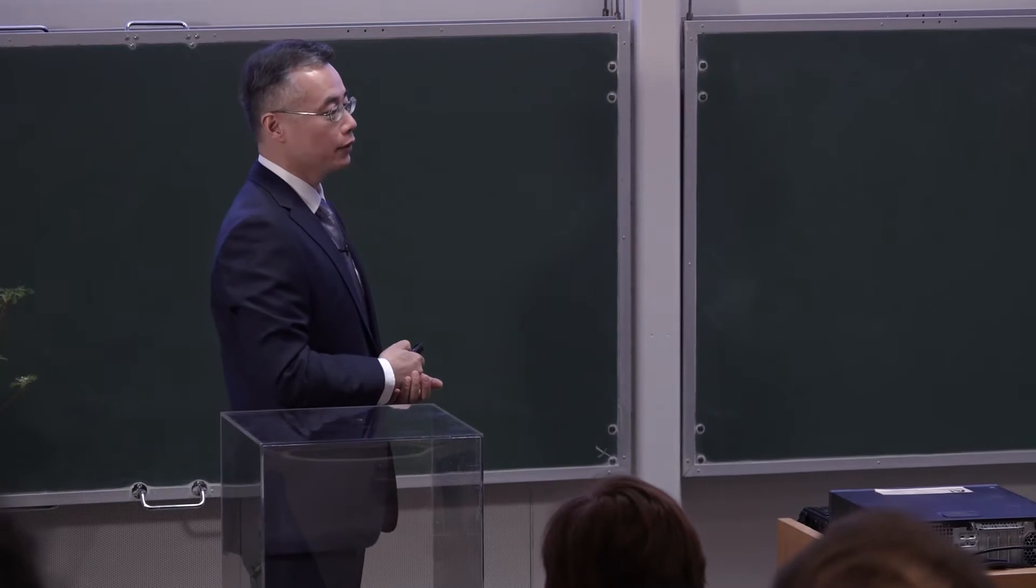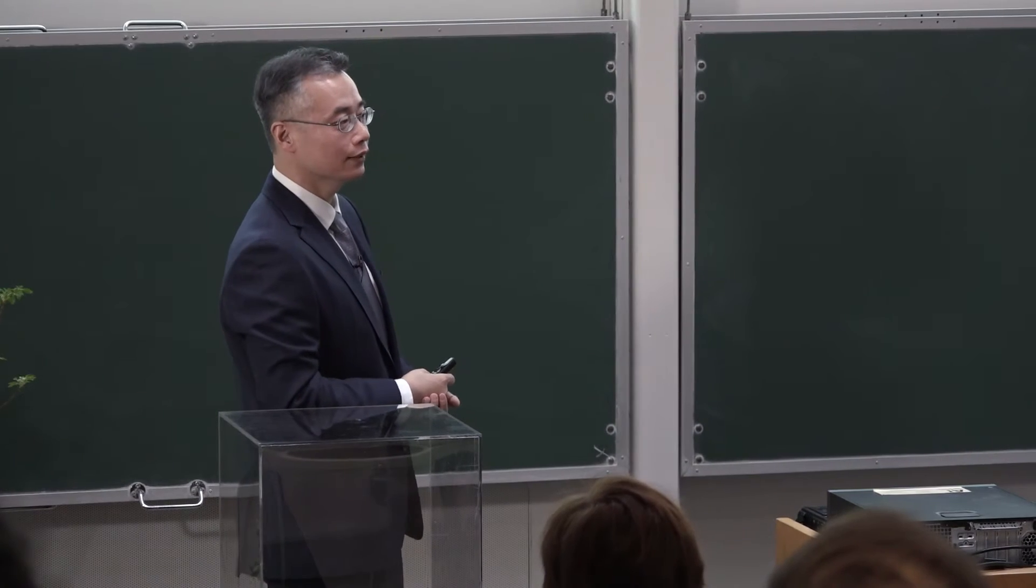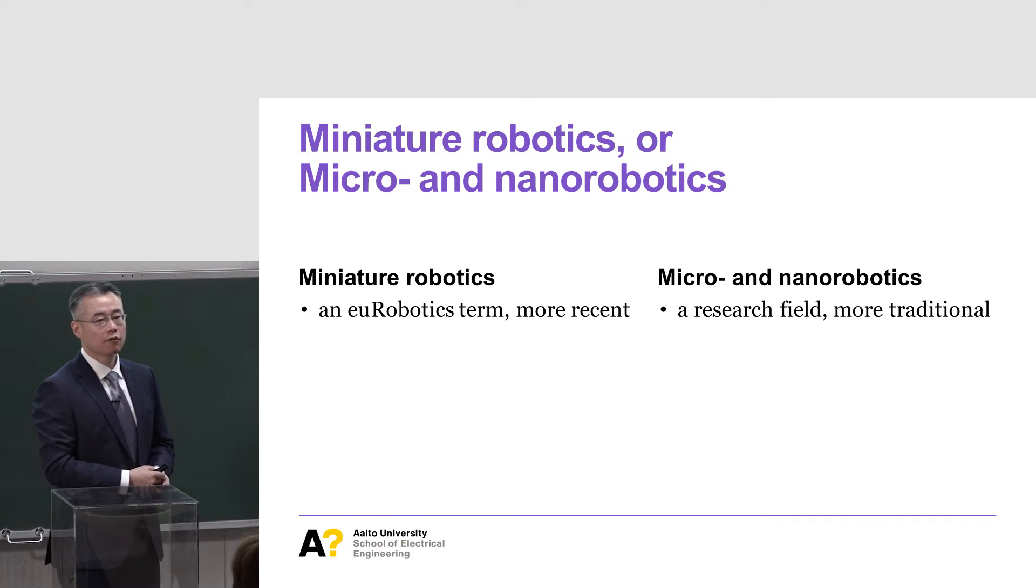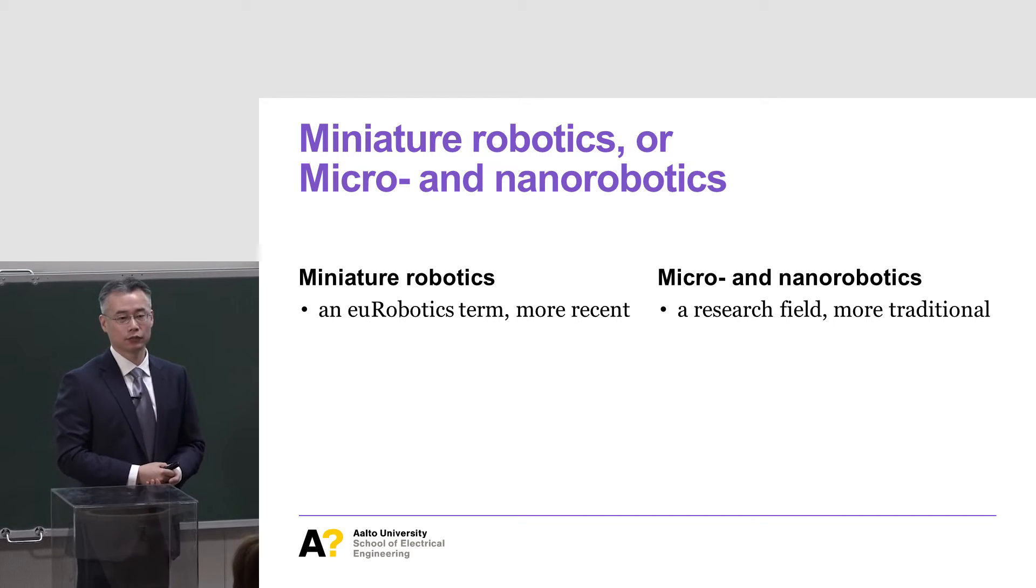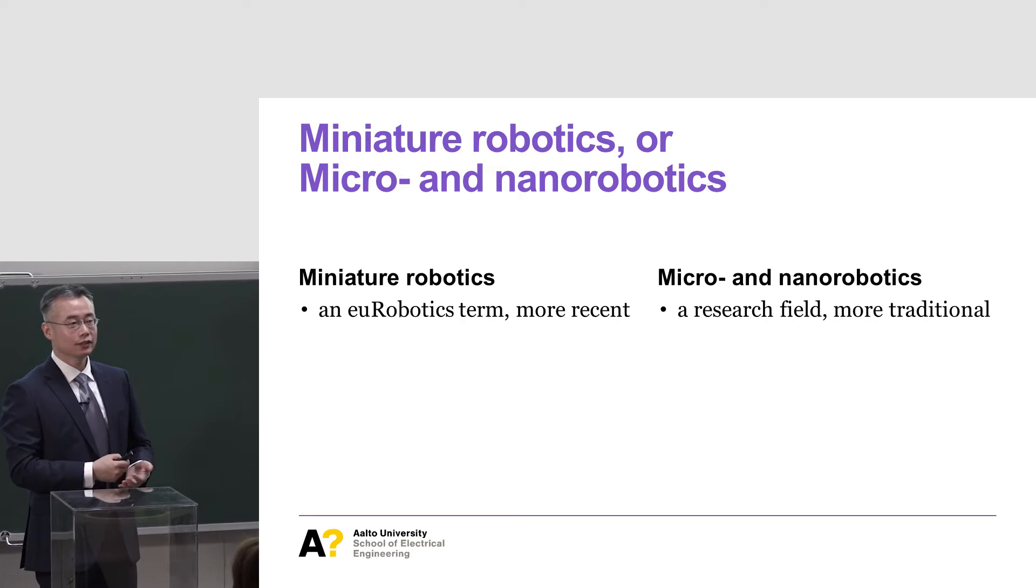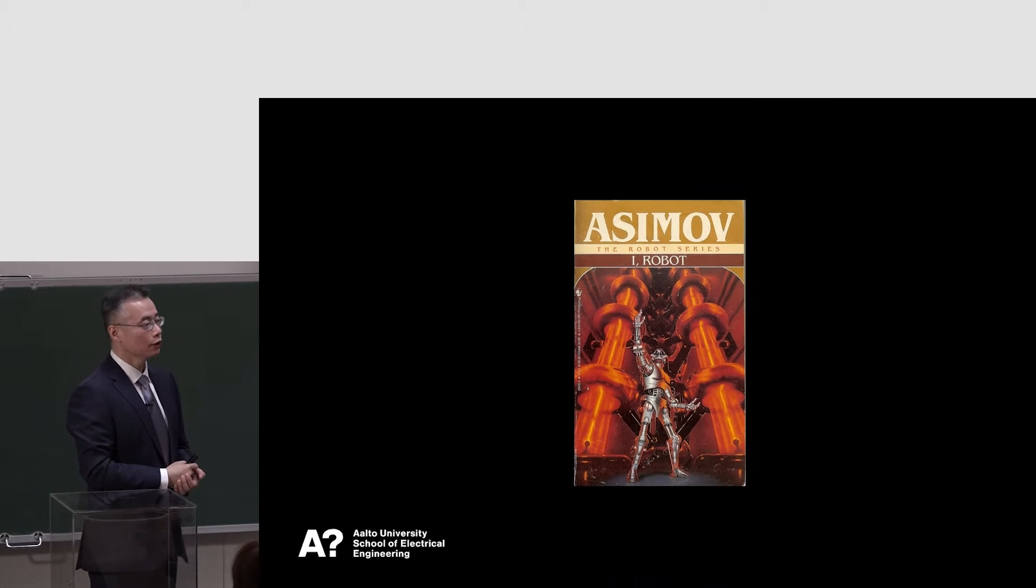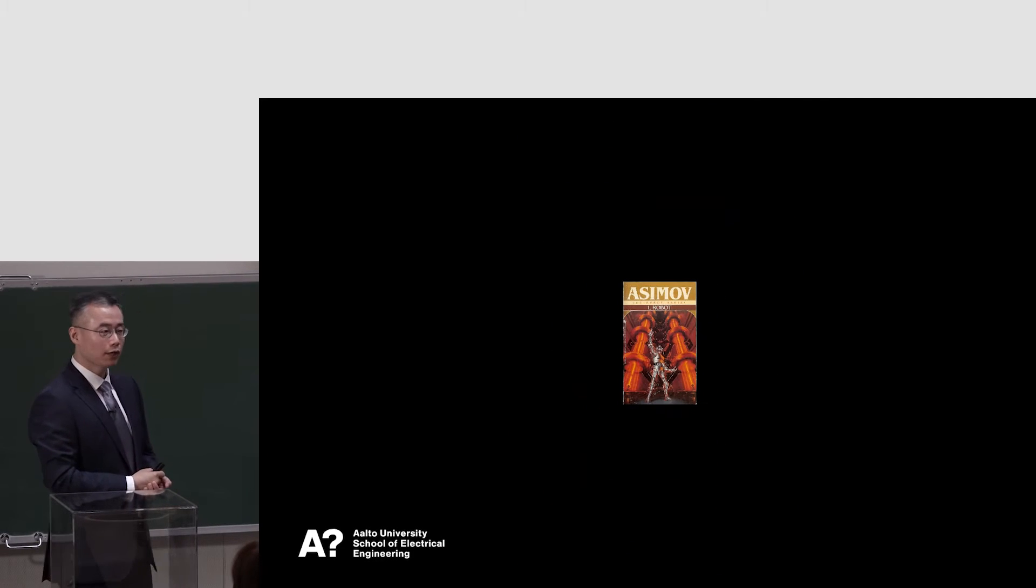Maybe I'll just first explain the terminologies I'm using. This is a more recent term called Miniature Robotics from EU Robotics. Traditionally, we call it micro-nano robotics in the research field. But whether it is miniature robotics or micro-nano robotics, what are they? Are they just big robots that are slightly smaller and otherwise similar?